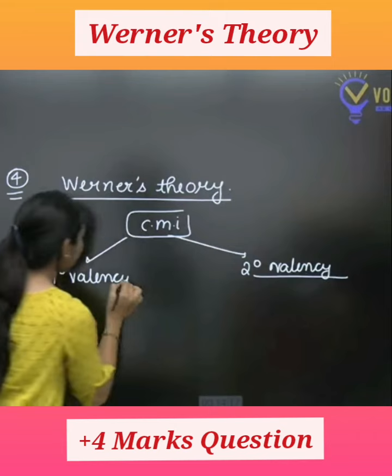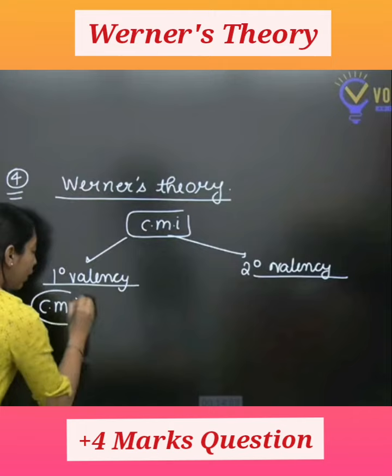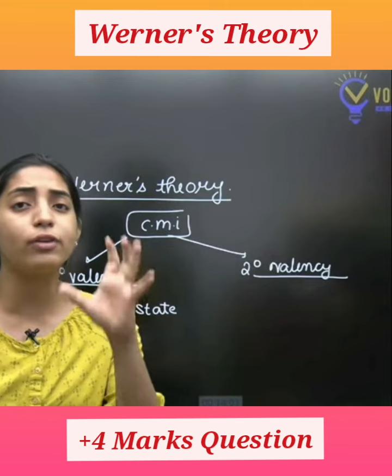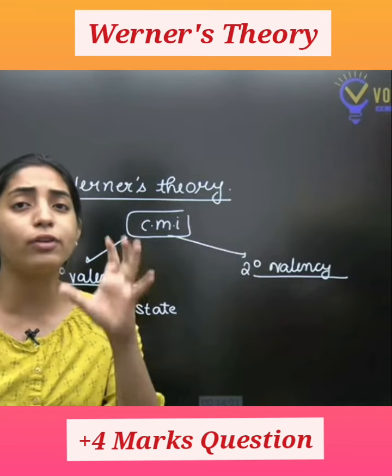Primary valency means the oxidation state of the central metal ion — whatever is the oxidation state of the central metal ion, we call it primary valency. And secondary valency means the coordination number of the central metal ion, that is basically known as secondary valency.